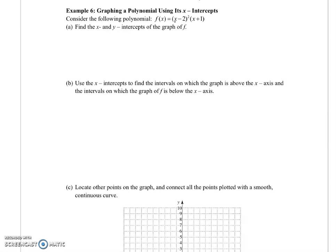For example, if we have (x - 2)² times the quantity (x + 1), we can find the x-intercepts and the y-intercepts just like we did in the previous problem in the previous video.